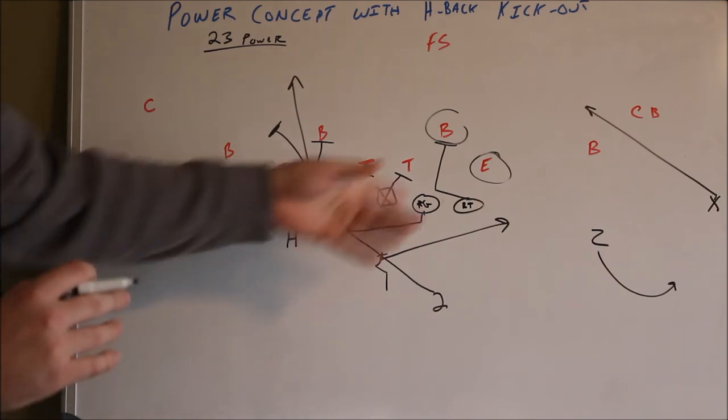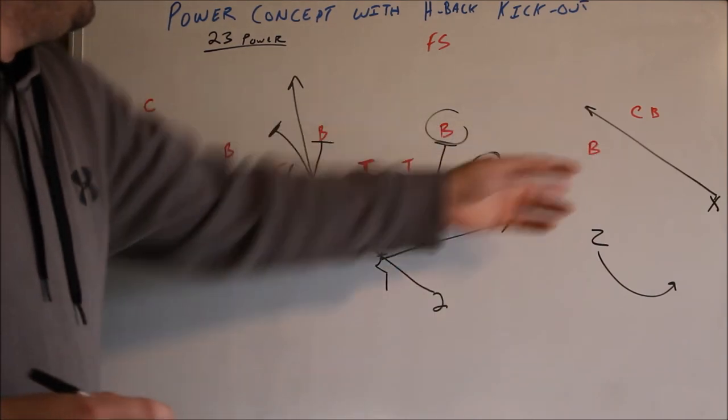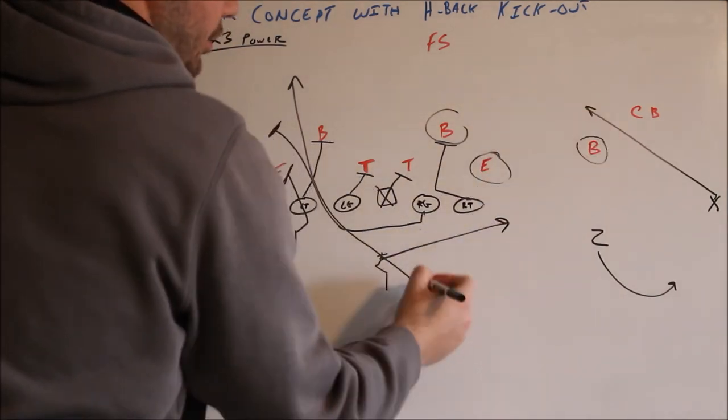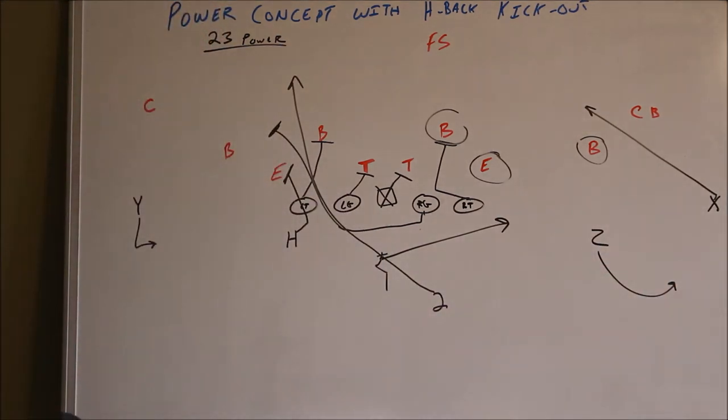But, again, you can implement the zone read. You can read this man on the line. You could implement the quick bubble. If this kid's playing off coverage, you could just have him throw the quick bubble, get your athlete the ball out in space.